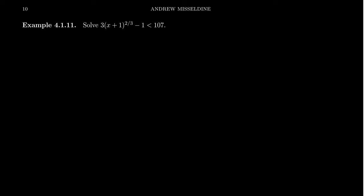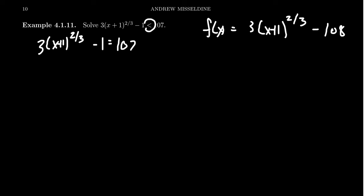So to solve this inequality, we're going to take 3 times x plus 1, raise it to the 2 thirds power minus 1 and set that equal to 107. Now be aware that in the future, we're going to consider graphing the function 3 times x plus 1 to the 2 thirds minus 108. So you can always set this equation equal to 0, and that's the function you want to graph to see if you're above or below the x-axis. We're going to be looking for things that are going to be below the x-axis in just a little bit.